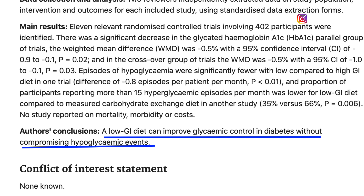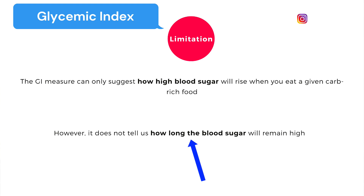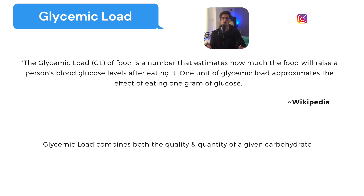A low GI diet is also useful for people with no medical issues in keeping their blood sugar normalized and as a weight loss intervention. However, the GI measure has a limitation: it can only suggest how high blood sugar will rise when you eat a given carbohydrate-rich food, but it does not tell us how long the blood sugar will remain high. This is where the concept of glycemic load comes in.